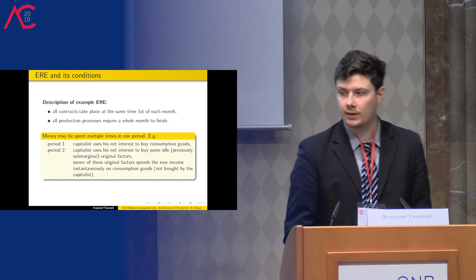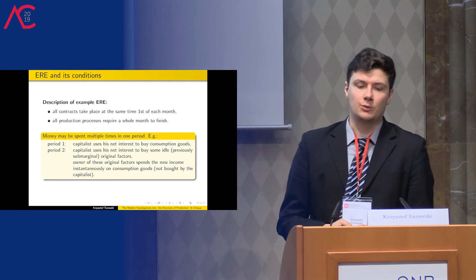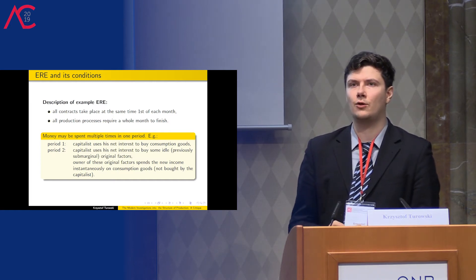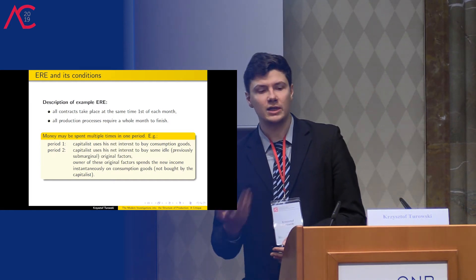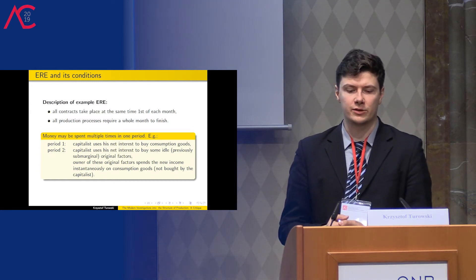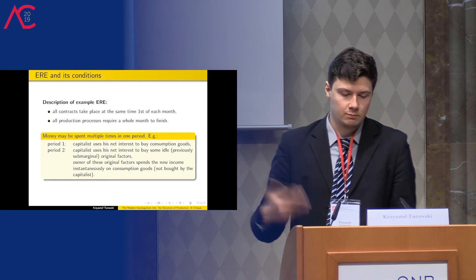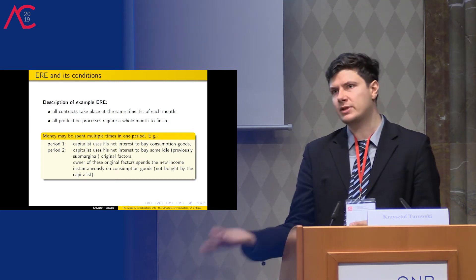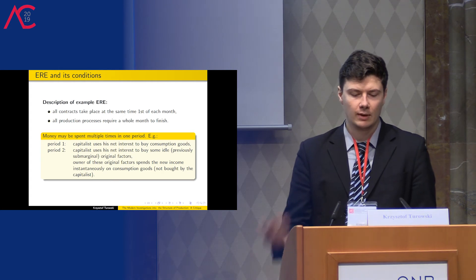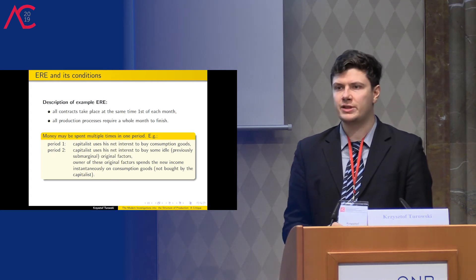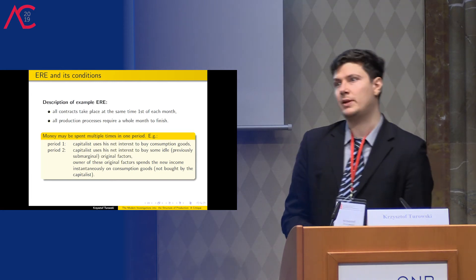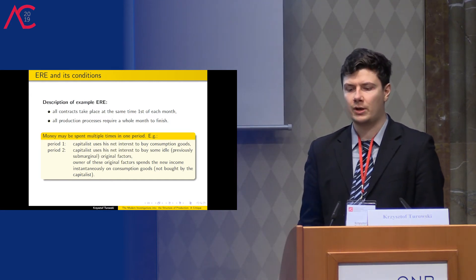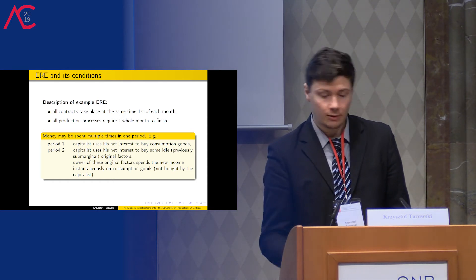For example, take any single agent. Suppose that in period one, a capitalist earns some net interest and spends it all on consumption goods. However, in the next period, he may refrain from buying those consumption goods and instead use the funds to hire some previously idle and sub-marginal original factors. So, for example, he hires a new laborer. Then this laborer also receives his payment at the first of the month in advance, and may spend it immediately on the consumption goods which were not bought by the capitalist. This is fairly obvious.